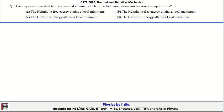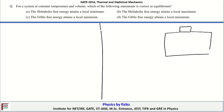The next problem: for a system at constant temperature and volume, which of the following statements is correct at equilibrium? For this purpose, consider a small system placed in contact with a big reservoir at temperature T. The reservoir is so large that any finite heat exchange will not alter its temperature. Let dq be the heat transferred to the system from the reservoir.